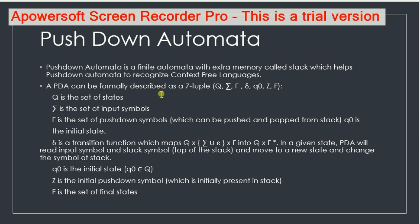Pushdown automata has seven tuples. Q represents the set of states. Sigma represents the input symbols. Tau represents the pushdown symbols — those symbols which can be pushed in and pushed out of the stack. Delta is the transition function, which governs the push and pop operations by reading the input symbol and the stack symbol. Q0 is the initial state, Z is the initial pushdown symbol which is present initially in the stack, and F is the set of final states.